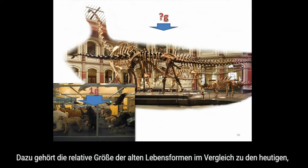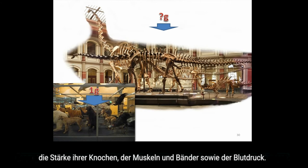The force of ancient gravity can be estimated from ancient life using a number of different methods, including the relative scale of ancient life compared to present-day life, ancient life's bone strength, its muscle strength, ligament strength, and its blood pressure.